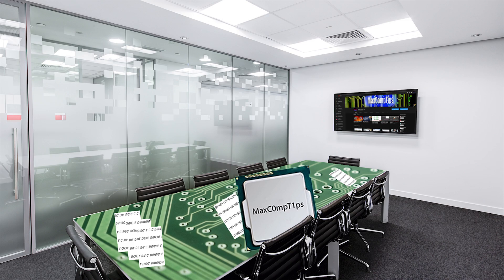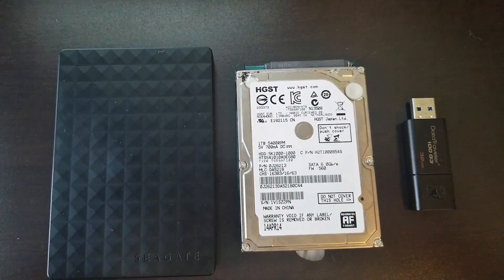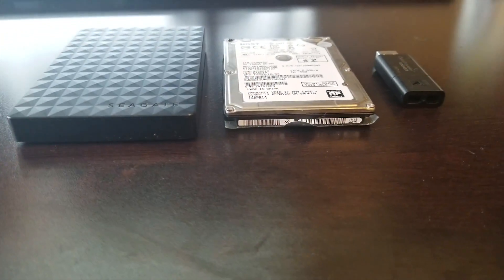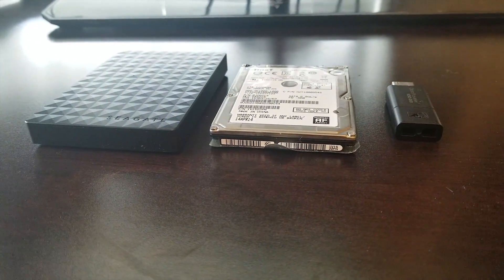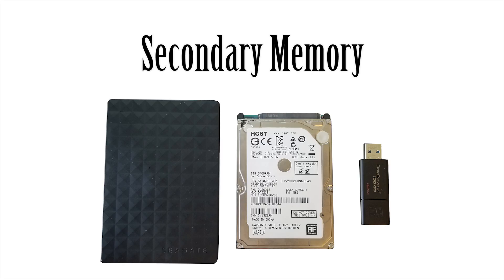Secondary memory is your hard drive space, your storage, your flash drive — anything else that isn't temporary. Basically anything that's not RAM, because RAM is pretty much the only memory that's temporary. Everything else — if you have a picture, a video, anything you save — you're saving it to your secondary memory storage, which is going to be like a hard drive.